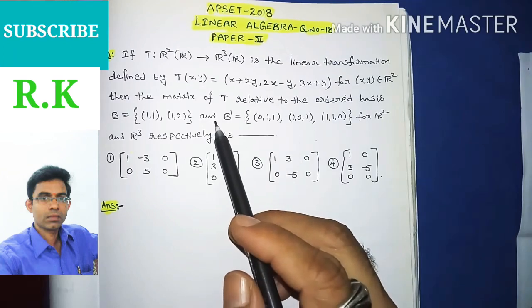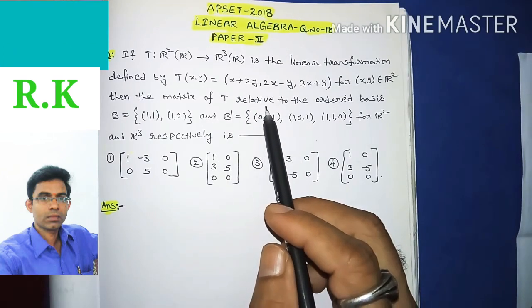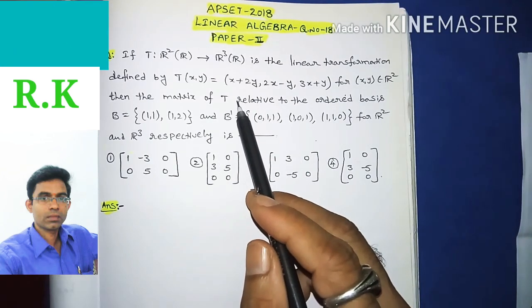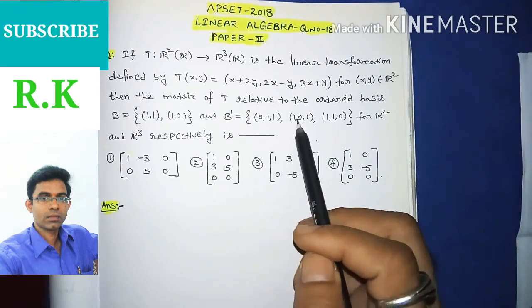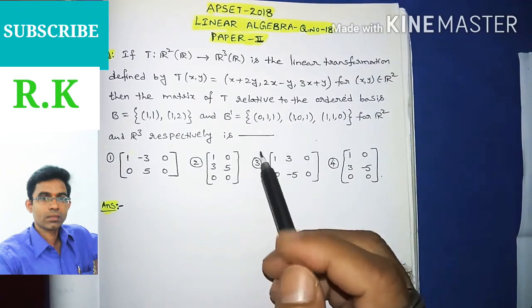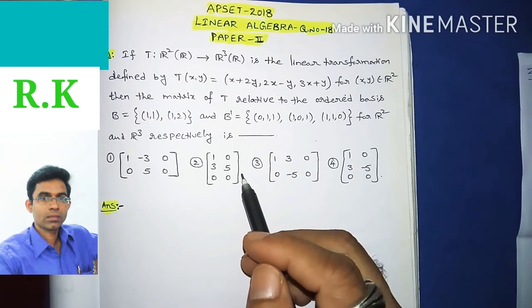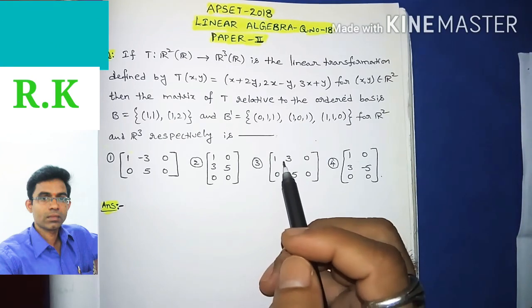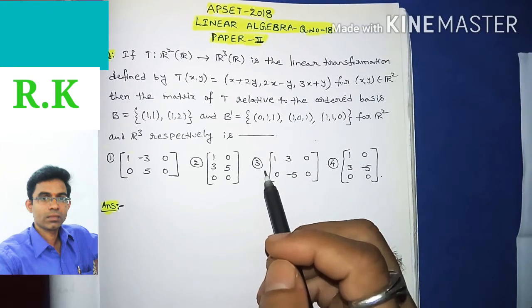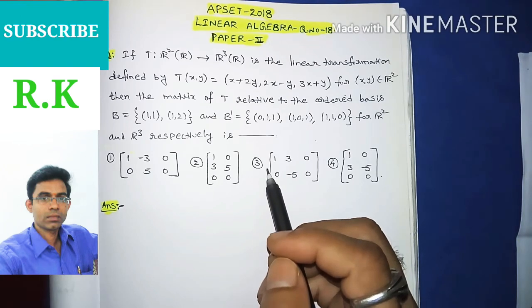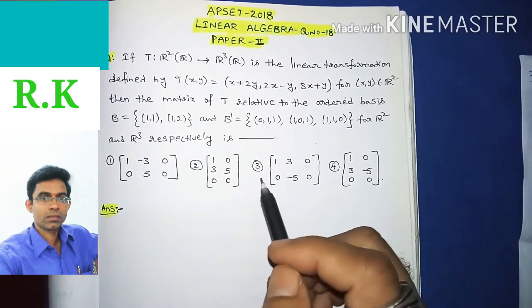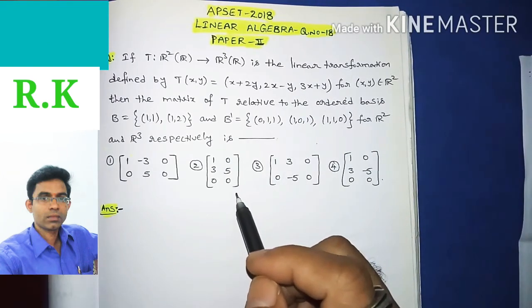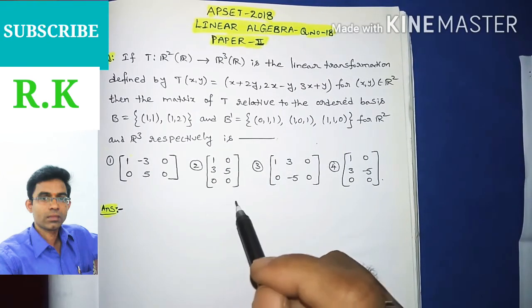The question is about the matrix representation of a linear transformation with respect to the given ordered basis. For this, we first recall the concept of matrix of a linear transformation — that is, matrix representation of a linear transformation with respect to a given ordered basis.